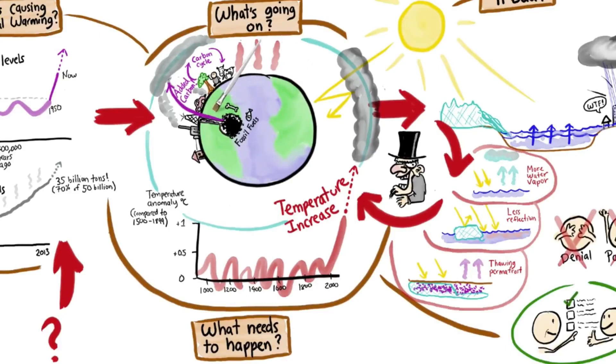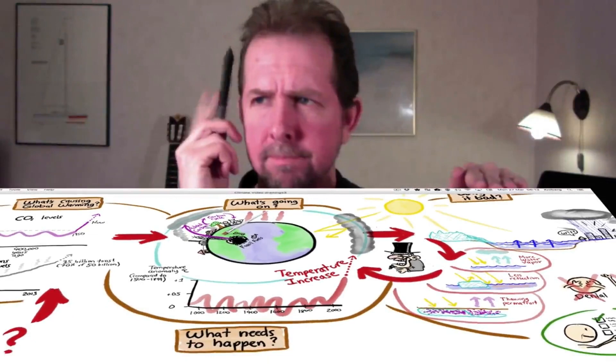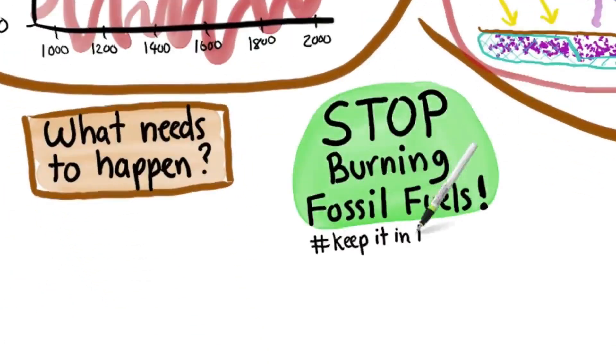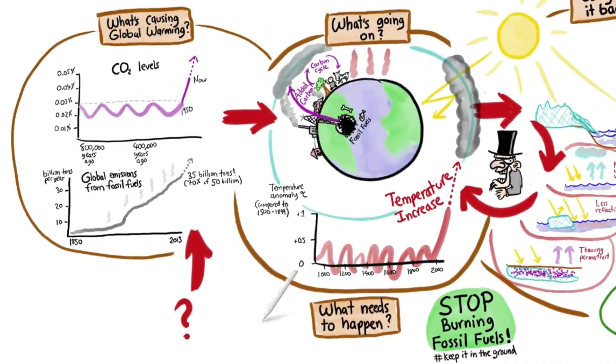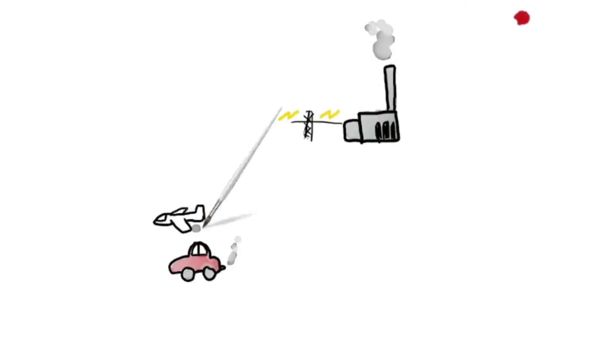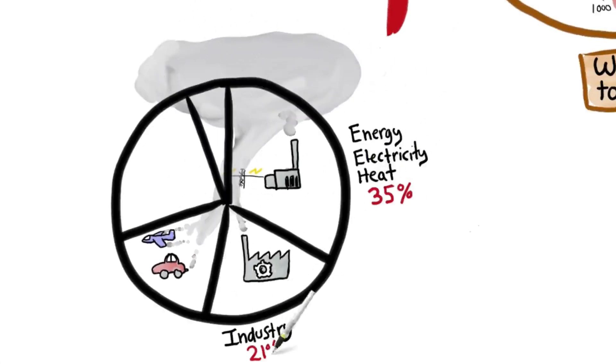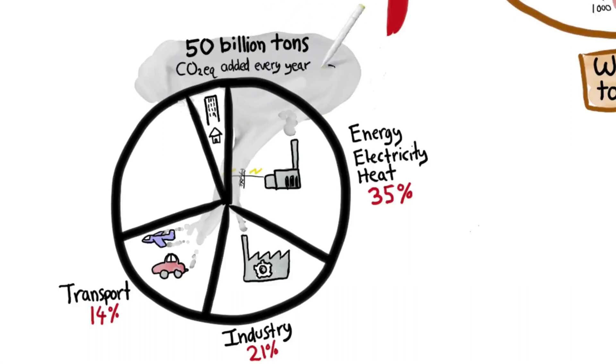Since burning fossil fuels is the primary cause of global warming, we need to stop burning fossil fuels. So wait. Why are we burning this stuff again? We burn it in power plants to generate electricity. We burn it inside cars and planes to drive them around. We burn it in factories to produce stuff. See the chimneys? Exhaust pipes? Smoke. That's a hint. All this accounts for about two-thirds of the 50 billion tons. And by the way, that smoke is deadly poisonous, so we kind of want to get rid of it anyway.